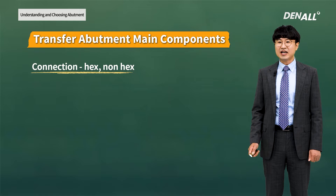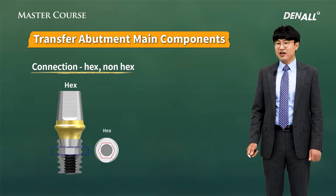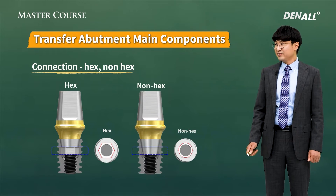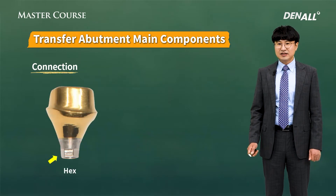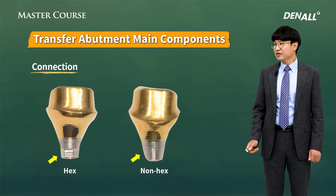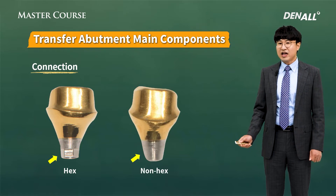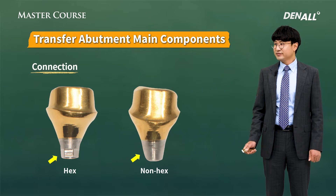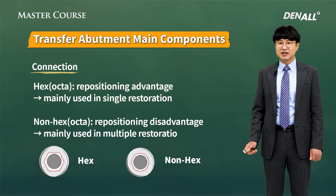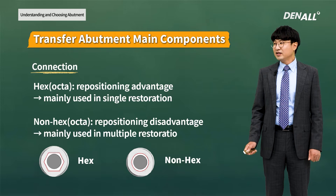Next, we need to consider connections. Connections can be divided into the hex type and the non-hex type. As you can see, the hex type has the shape of a hexagon. The non-hex type is not shaped like a hexagon. The biggest advantage of the hex type is that it can be repositioned, and it is mainly used in single-tooth restoration.